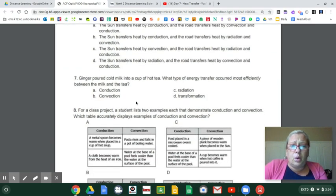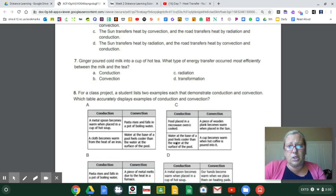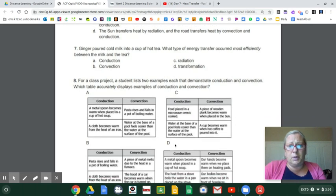Number seven. Ginger poured cold milk into a cup of hot tea. What type of energy transfer occurred most efficiently between the milk and the tea? So when you put the cold milk into the hot tea, I notice that the cold milk usually blends in kind of right away. So I would think it has to be something about convection. So I would go with convection on this one, even though that's kind of a weird question. I know it's not radiation because that's the sun. Transformation is not part of heat transfer. I know that the cold milk touches the hot tea, but this is really all about liquids. So I probably wouldn't pick that because if it's literally a liquid, then I would probably go with convection because it's heat transfer and air, water, atmosphere, liquids, gases.